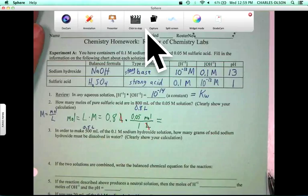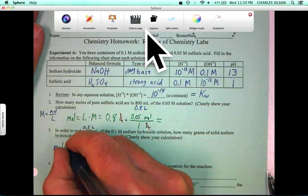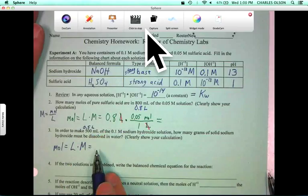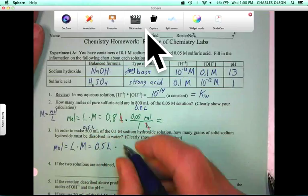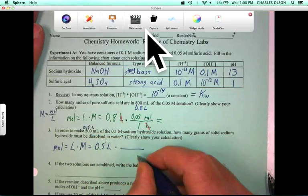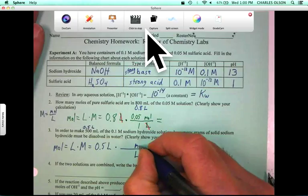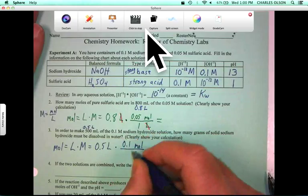First, we'll take this information to get the moles. Once again, moles equals liters times molarity equals 0.5 liters times our molarity, which is, let's see, we want to get out of liters into moles. Molarity, 0.1 moles per liter.